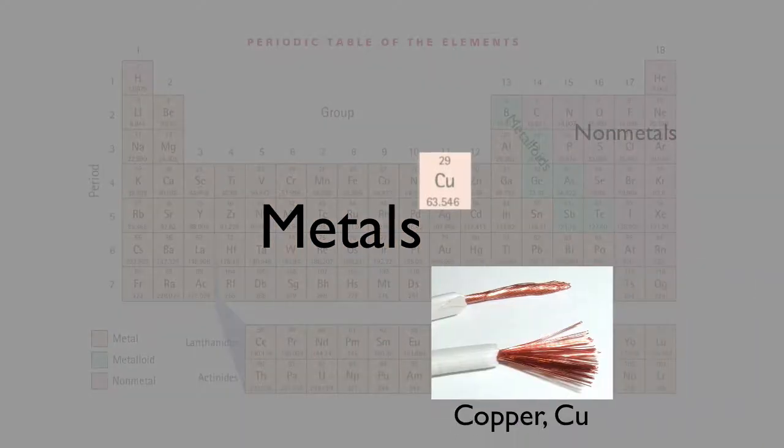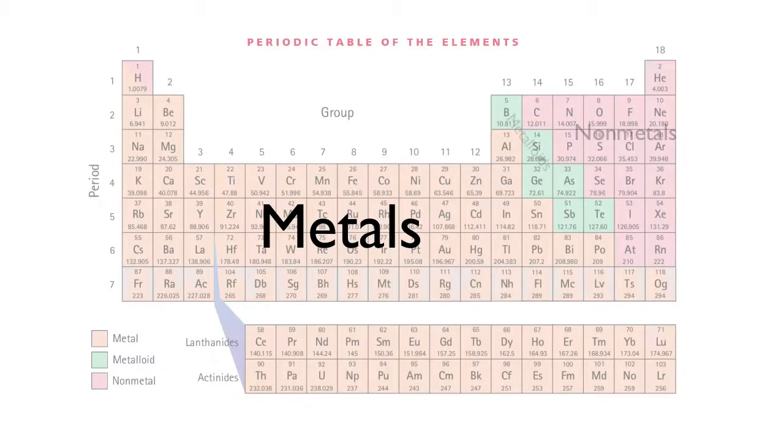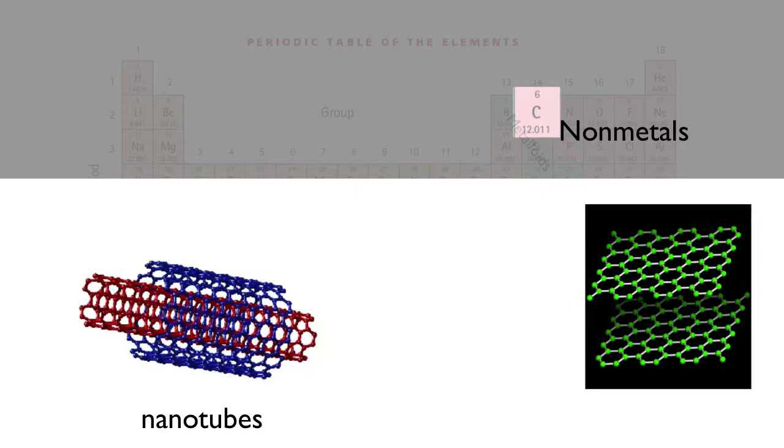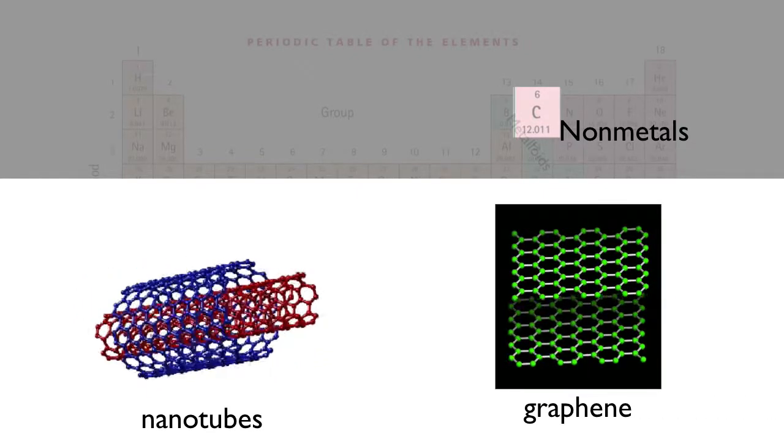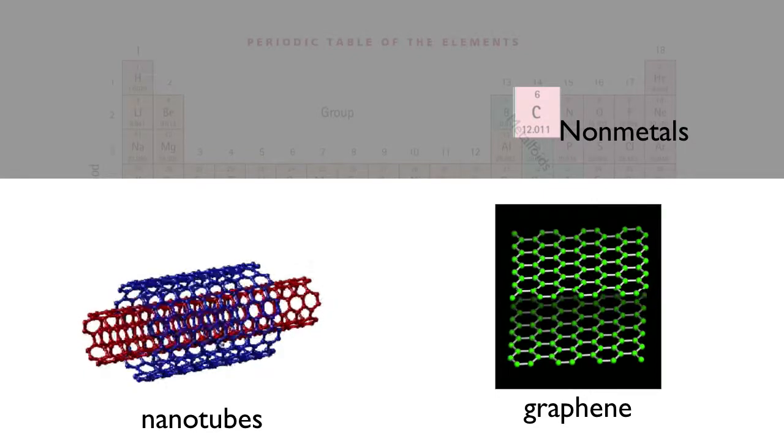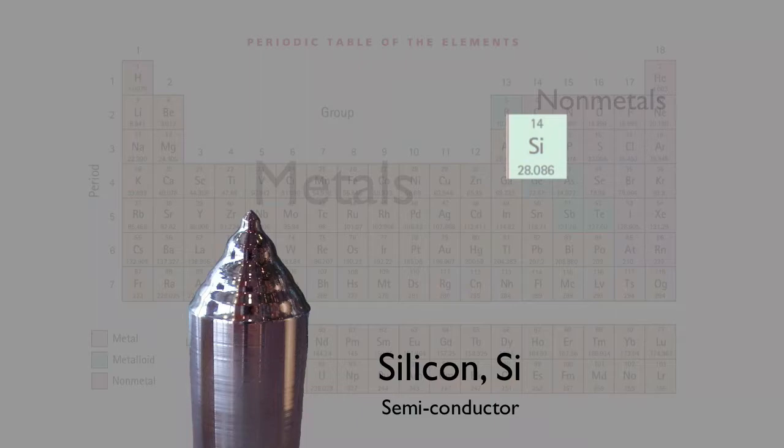Metals are great at conducting electricity. With few exceptions, nonmetals are just the opposite. They tend to be good insulators of electricity. An exception are the carbon-based nanotubes or the nanosheets made of graphene, which is all the rage now in the field of nanotechnology. The metalloids only sort of conduct electricity, which is to say they're semiconductors. The most famous semiconductor of them all is silicon.